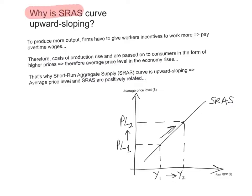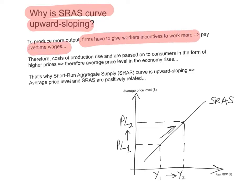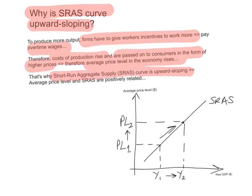Why is the short run aggregate supply curve upward sloping? The short run in macroeconomics is the period where the prices of the factors of production, including the wages of labor, are fixed. To produce more output, firms have to give workers incentives to work more, so they have to pay overtime wages. Therefore, costs of production rise and these are passed on to consumers in the form of higher prices, causing the average price level in the economy to rise. That is why the short run aggregate supply curve is upward sloping — the average price level and SRAS are positively related.